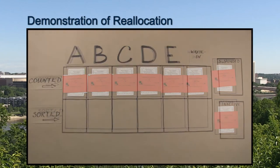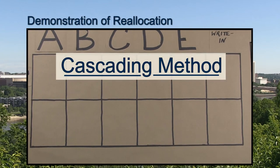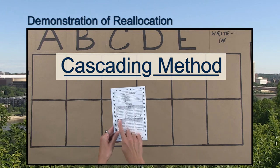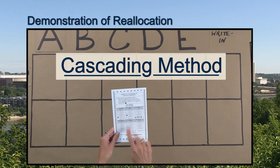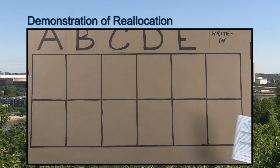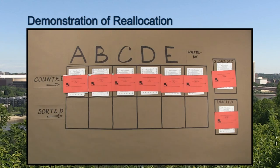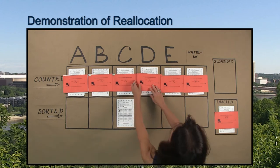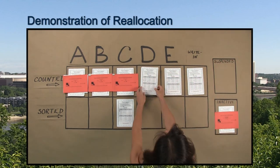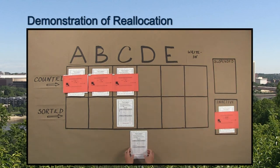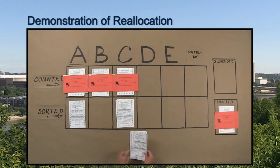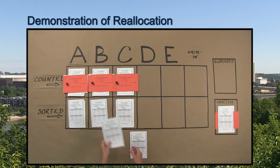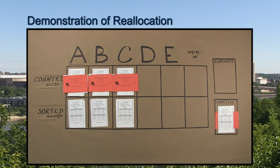The ballots for the eliminated candidates will be reallocated by cascading to the next viable choice. Any ballot for which no viable choice remains will be placed in the inactive pile for the duration of the reallocation. The suspended ballots will be reallocated first, then the ballots for the eliminated candidates are reallocated. After the first reallocation, the sorted ballots are counted and then added to the first-choice piles to determine if a candidate has met the threshold to win the election.